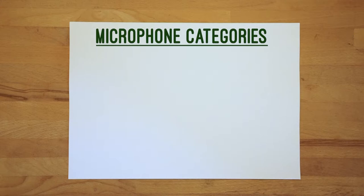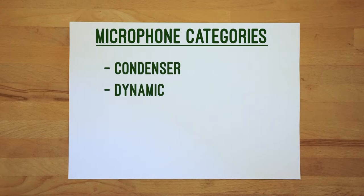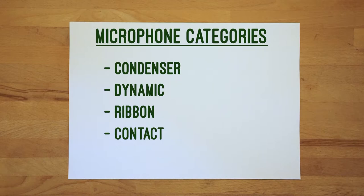There are many different types of mics available, and sometimes it's hard to see the forest for all the trees. So we'll go back to the basics and look at some main categories: condenser microphones, dynamic microphones, ribbon microphones, and a group whose terminology is sometimes used interchangeably even though they do not work the same at all — which makes it confusing and worth sorting out. These are contact mics, piezo microphones, and pickups.